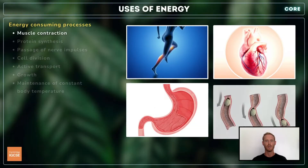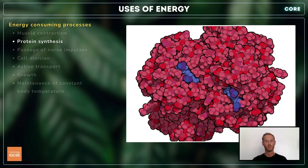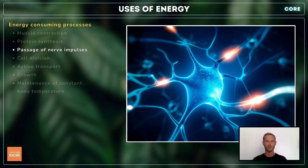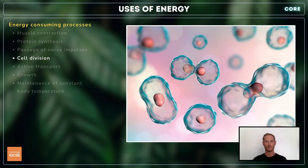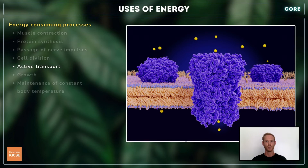Energy-consuming processes in the body include the contraction of muscle cells to produce whole body movements, pump blood around the body, and for peristalsis in the alimentary canal. Energy is also required for the synthesis of proteins from amino acids, the transmission of nerve impulses, cell division — otherwise known as mitosis — and active transport, whereby molecules are moved across cell membranes against a concentration gradient.